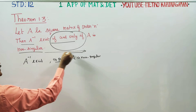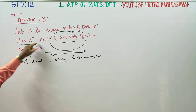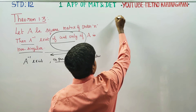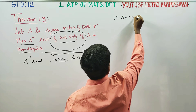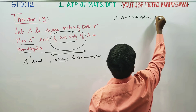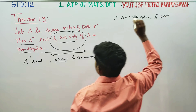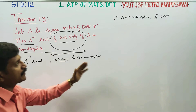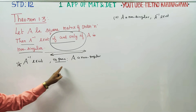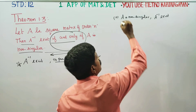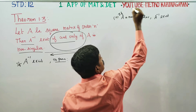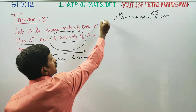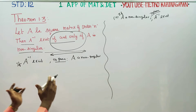In each direction you prove separately. If A inverse exists, you have to prove A is non-singular. If A is non-singular, you have to prove A inverse exists. So we are going to do two different proofs.